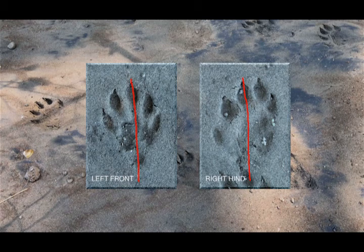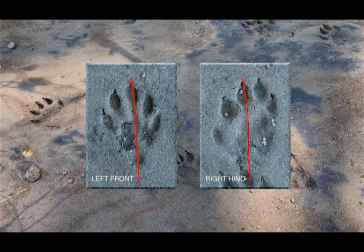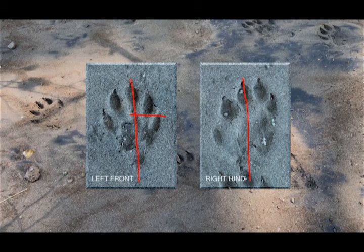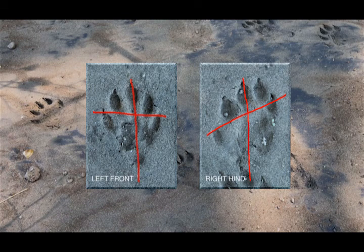These smaller inside toes, or toe 1 of the river otter, are a great way to tell left from right feet. You can also draw various lines for comparison, like from toe 1 to 5. The more asymmetrical, the more angled this line will be.